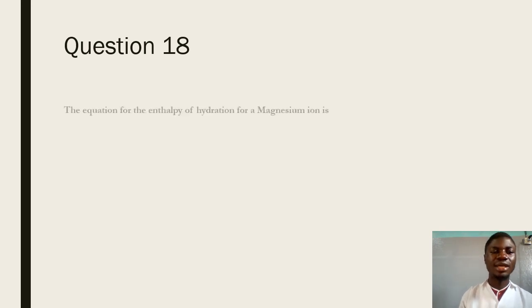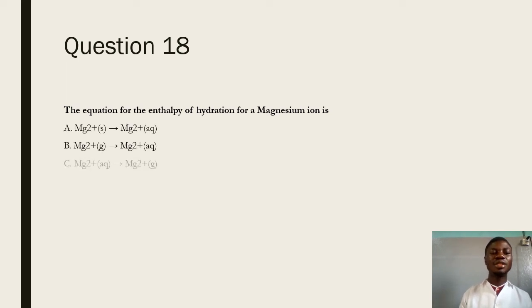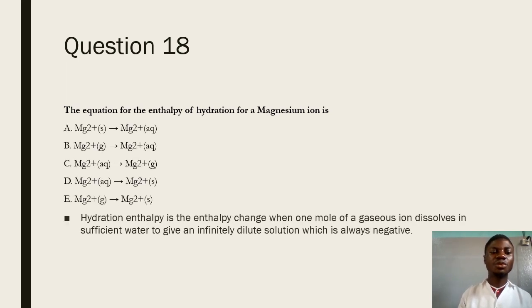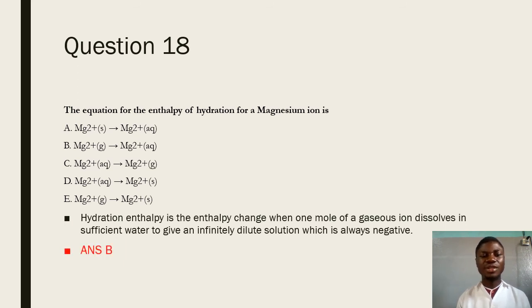Question 18 says: the equation for the enthalpy of hydration for a magnesium ion is — we have been asked to identify which equation correctly corresponds to the enthalpy of hydration of a magnesium ion. Enthalpy of hydration is the enthalpy change when one mole of a gaseous ion dissolves in sufficient water to give an infinitely dilute solution, and this enthalpy is always negative. The answer is D.